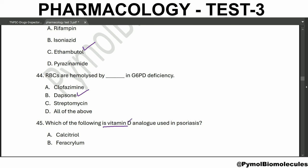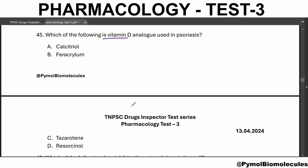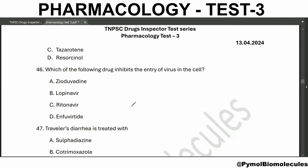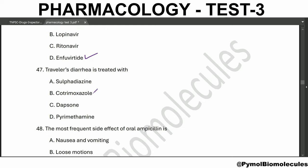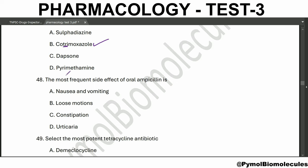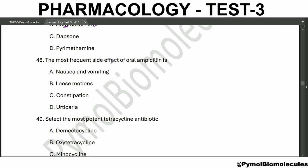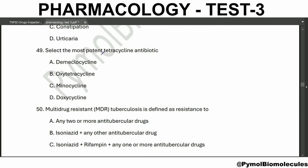Which of the following is a vitamin D analog used in psoriasis? Calcitriol. Which of the following drug inhibits the entry of virus into the cell? Enfuvirtide. Traveler's diarrhea is treated with cotrimoxazole - di-tri, that is one shortcut. The most frequent side effect of oral ampicillin is loose motions.